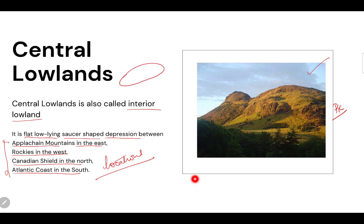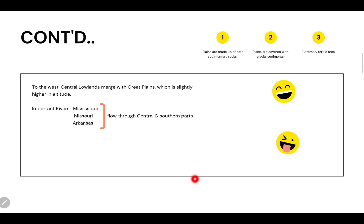Moving forward, the central lowlands merge with the great plains, which is slightly higher in altitude. The major rivers of central lowland are the Mississippi, Missouri, and Arkansas. These rivers flow through the central and southern parts.